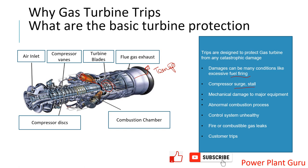The next category is compressor-related. Any compressor needs to be protected from surging and stalling phenomena. In a gas turbine this may also occur during startup and shutdown. Various types of compressor protections during startup and shutdown are given, like bleed valve position and IGV position. This type of trip is given for compressor surge and stall protection.